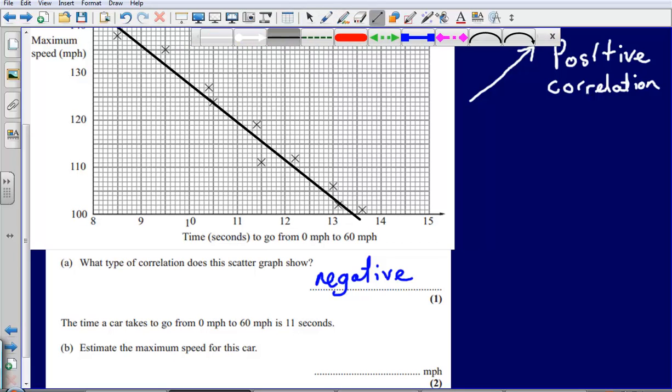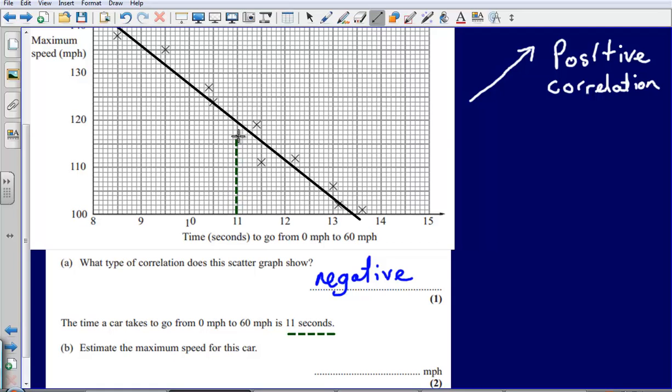So we would find on our graph eleven seconds. Eleven seconds is here—go from eleven seconds up to your line of best fit, then from your line of best fit go across to the maximum speed. We can see there that a car that takes eleven seconds to go from zero to sixty would probably be, and that's why it says estimate, it's not definitely going to be, but it's likely to be around a hundred and twenty miles per hour.